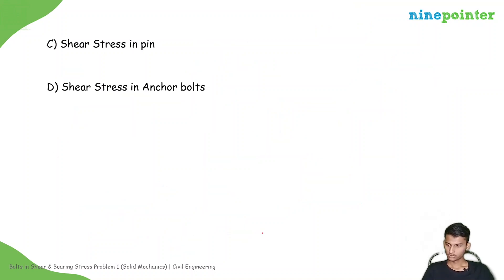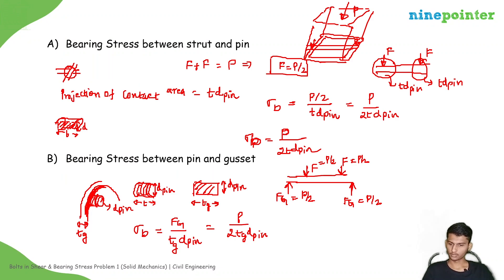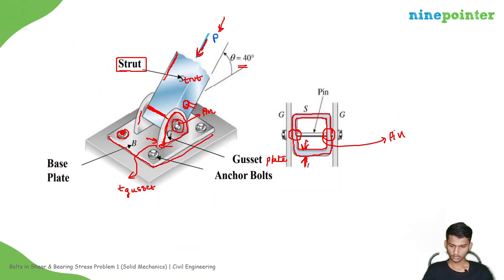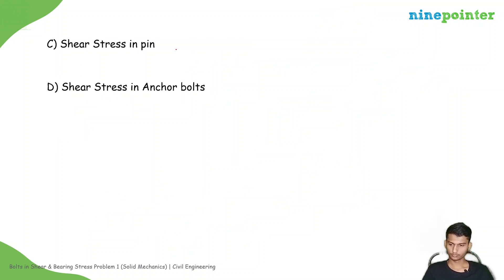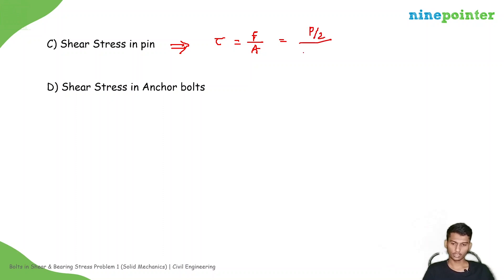Now, shear stress in the pin. The pin is here. Shear stress tau equals F divided by A. F is P by 2, and A is the cross-sectional area pi/4 · D_pin squared. So shear stress equals (P/2) divided by (pi/4 · D_pin²), which simplifies to 2P divided by (pi · D_pin²). Shear stress is straightforward.